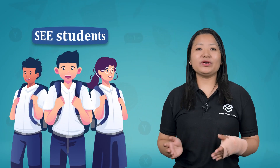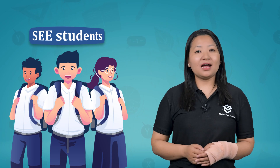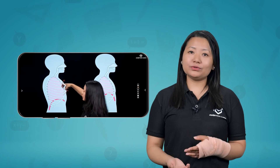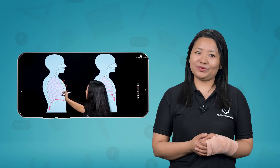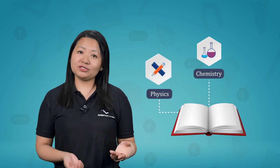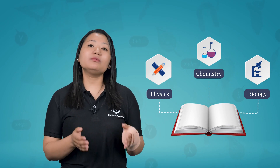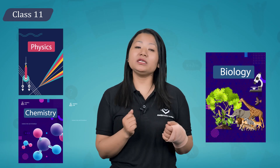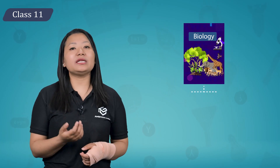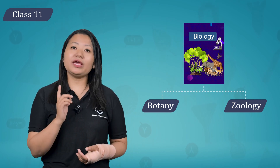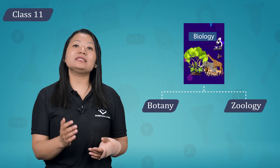Hello everyone! Welcome to all students joining the Ambition Guru price course. A warm welcome to all students. Now, in school you had Physics, Chemistry, and Biology in one book, but in Class 11, Physics, Chemistry, and Biology are separate subjects. In Biology, there are different branches like Botany and Zoology.